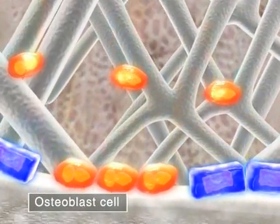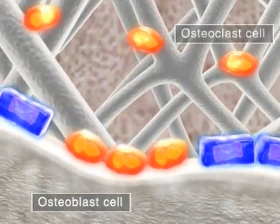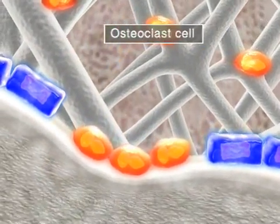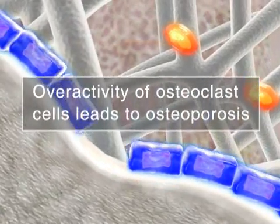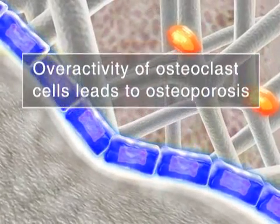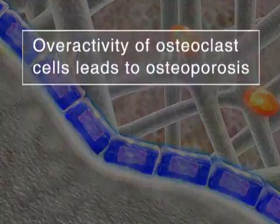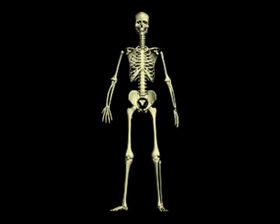Two essential cells are involved in the daily turnover of the bone: osteoblast cells and osteoclast cells. Overactivity of the osteoclast cells leads to osteoporosis.